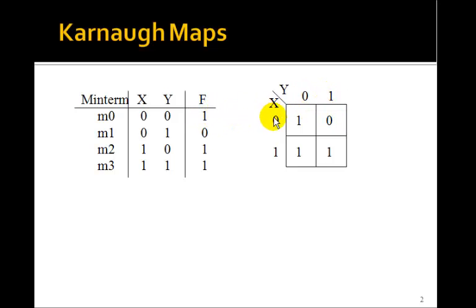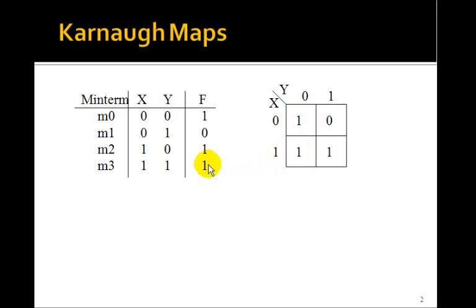Min term M0, where x is 0 and y is 0, is 1. Where x is 0, y is 1, the value is 0. Where x is 1, y is 0, that's this 1. And the last one is where x and y are both 1. This little square is going to be a Karnaugh map, and it has the same information as the truth table.